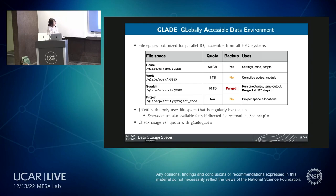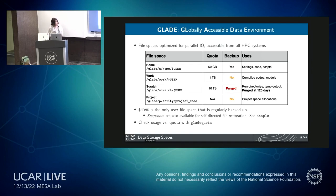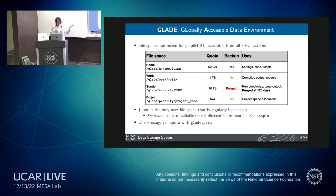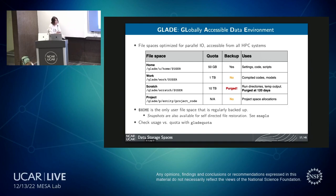If you need more scratch space, just submit a ticket. We'll communicate with you about how much you need and why, then expand or contract your quota accordingly. Lastly, there's a project space allocation for shared information between project members. This is set up in your allocation request. This space is also not backed up and has no default quota — that's determined in your allocation request.